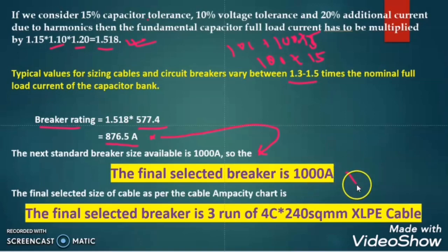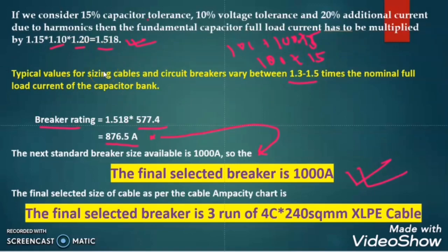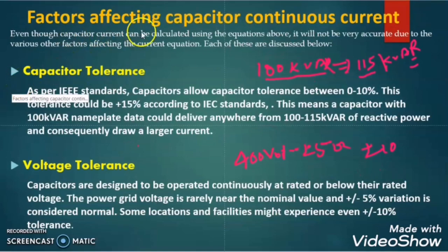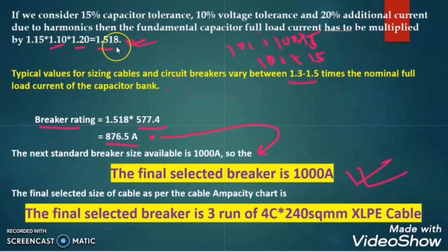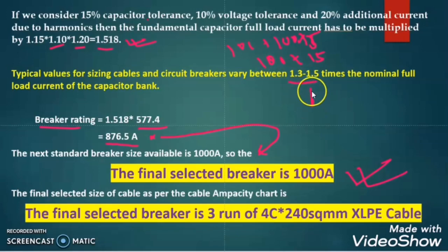The final selected breaker is 1000A. My intention in this video is to build your concept to calculate the breaker rating for the capacitor bank. That is why I explained the different factors affecting the capacitor continuous current: capacitor tolerance, voltage tolerance, frequency tolerance, and harmonics. When you calculate any capacitor bank circuit breaker, you can directly take this factor — here I explained from where we get this factor.